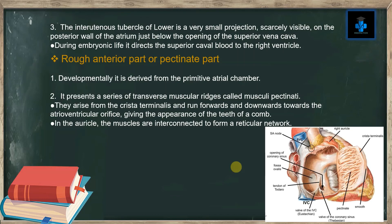The rough anterior part, or pectinate part: developmentally it is derived from the primitive atrial chamber. It presents a series of transverse muscular ridges called musculi pectinati, which arise from the crista terminalis and run forwards and downwards to the atrioventricular orifice, giving the appearance of the teeth of a comb. In the auricle, the muscles are interconnected to form a reticular network.